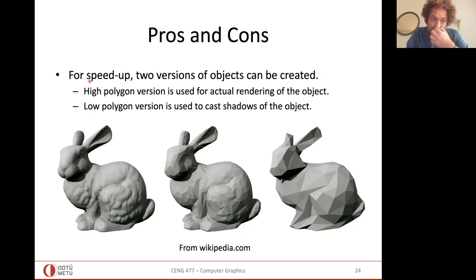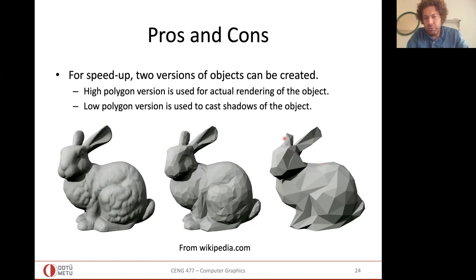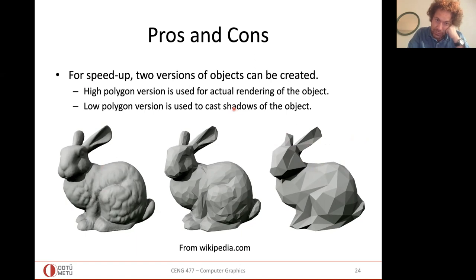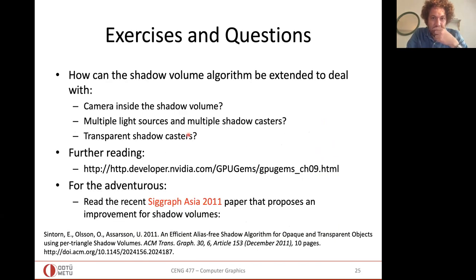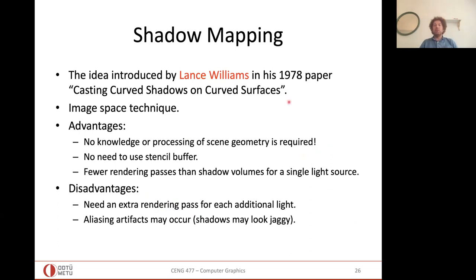A common trick for speedup is to keep a low-resolution version of the object, compute contour edges and define the shadow volume on that version, then render the actual high-resolution model. The shadow detail is decided by the low-resolution contour edges, which works well because shadows are just black — there won't be fine detail in them, so a lower resolution can be tolerated.